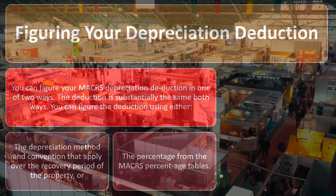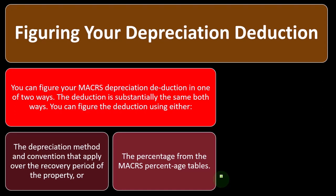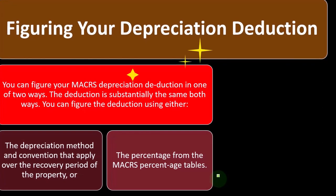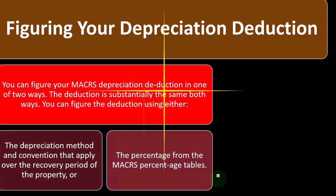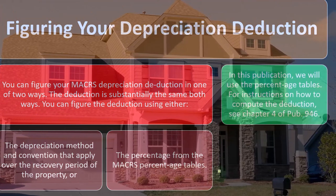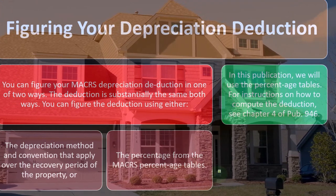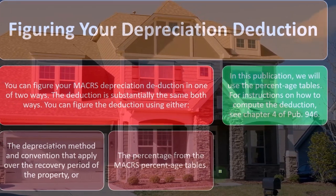But we still want to have an idea of what's going to happen into the future. If we can calculate these costs out into the future, that also helps us do projections, because tax software often helps us for the current year and possibly into the next year. But if it's a 30-year property or a five-year property, we might want to project out further to make our decisions. So in this publication, we will use the percentage tables for instructions on how to compute the depreciation.